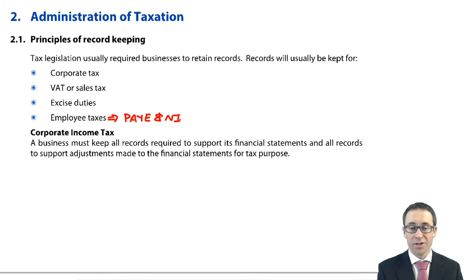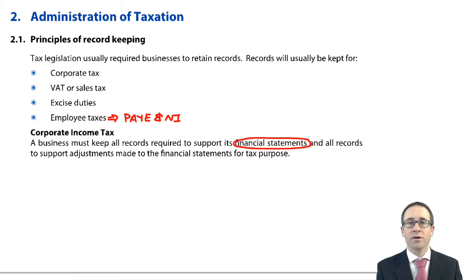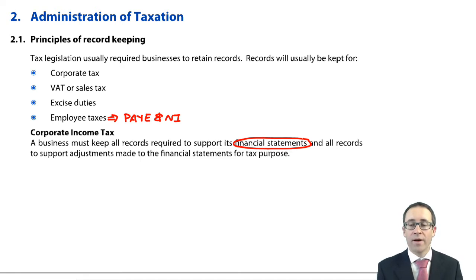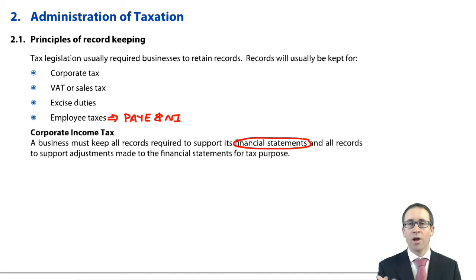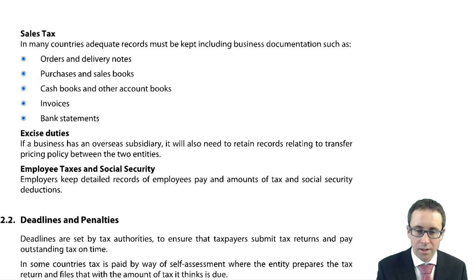Looking at the specifics of corporate income tax: the business must keep all records required to support its financial statements. The auditors will go through and inspect those financial statements and expect those records to be kept — that's one of the responsibilities of the directors. And all records supporting adjustments made to the financial statements for tax purposes. So if we're looking at tax depreciation, you need to make sure that you have the evidence of the purchase of that asset so the tax depreciation can then be applied.